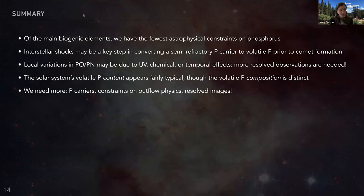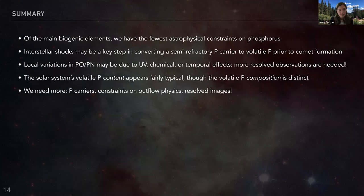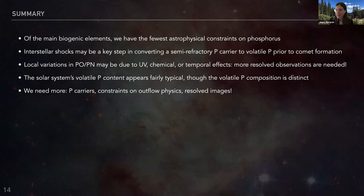To summarize: of the main biogenic elements, we have by far the fewest astrophysical constraints on phosphorus. We think that interstellar shocks are playing a key role in converting from a semi-refractory phosphorus carrier to a more volatile form prior to the formation of comets. We see large local variations in the PO-to-PN ratio, which could be due to UV, chemical, or temporal effects, but we need more resolved observations. While the solar system's volatile phosphorus content seems quite typical, the composition is quite distinct between the solar system and these low-mass protostars, so we essentially need a lot more data.